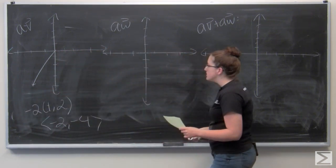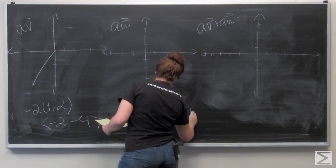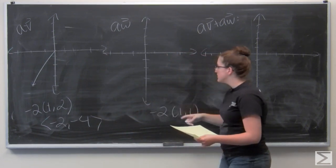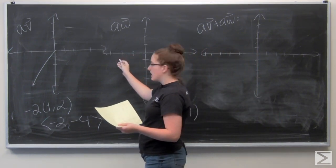Now for aw, this is going to be negative 2 times the vector (1, 1). And again I'm just going to distribute to get a vector that is (-2, -2). So I want to go over 2 and down 2.